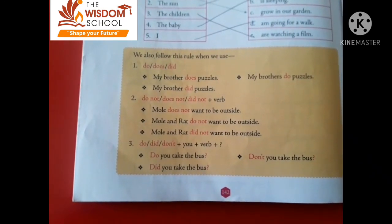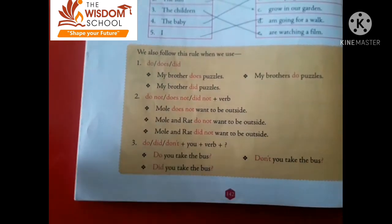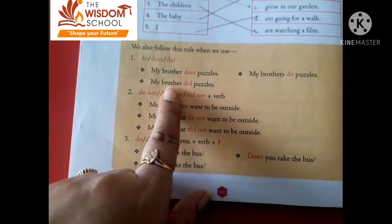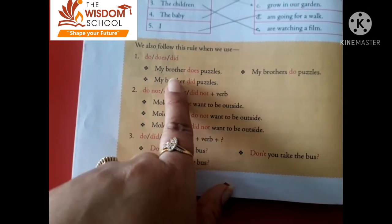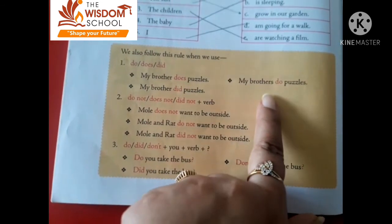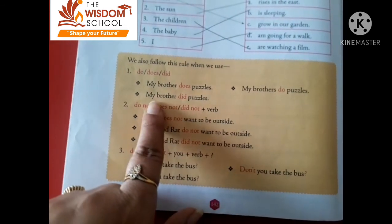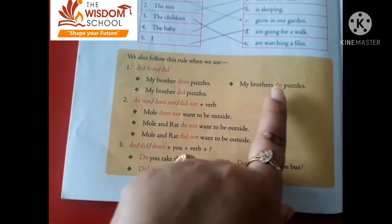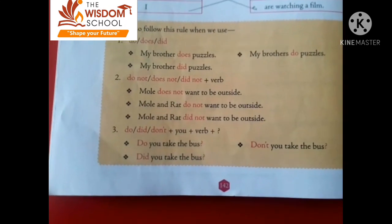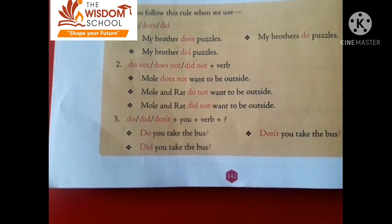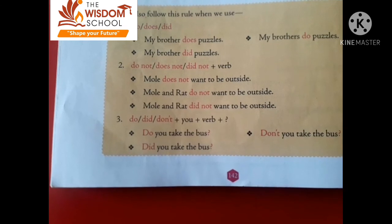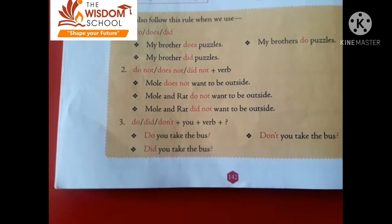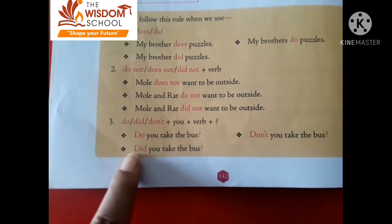We also follow this rule when we use do, does, or did. 'My brother does puzzles' — brother singular, so singular verb 'does.' 'My brothers do puzzles' — brothers plural, so plural verb 'do.' 'My brother did puzzles' — past, so 'did.' In the present tense: singular के साथ 'does' आएगा, plural के साथ 'do' आएगा, और past में 'did.' Negative sentence: 'My brother does not want to be outside.' 'My brother and rat do not want to be outside.' Past: 'My brother and rat did not want to be outside.'